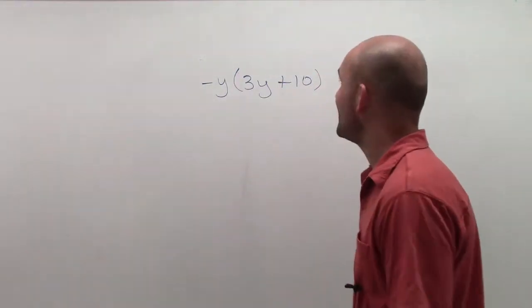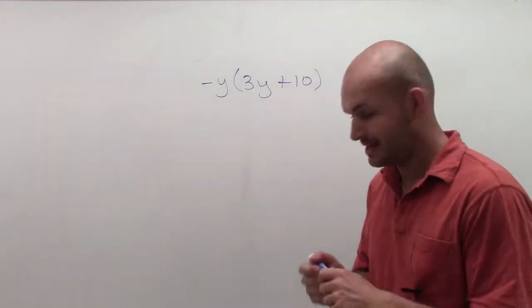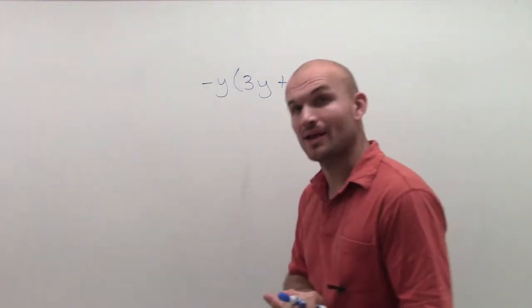So we have negative y times (3y plus 10). What I need to do here is apply the distributive property.